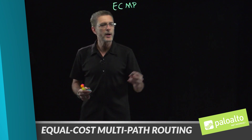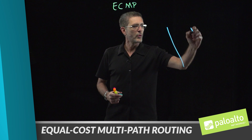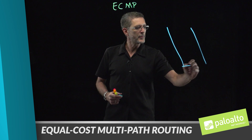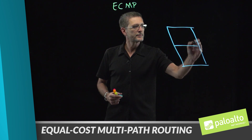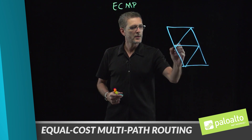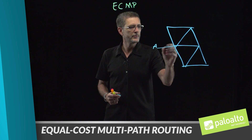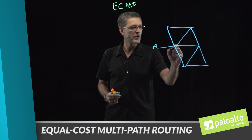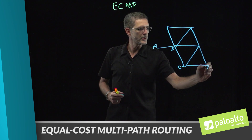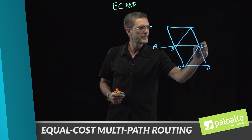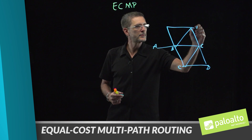Let's take a look at a typical network to see what this would look like without ECMP enabled. We'll draw a fictitious network here and give it some various routes. Now we'll associate costs to these various routes.